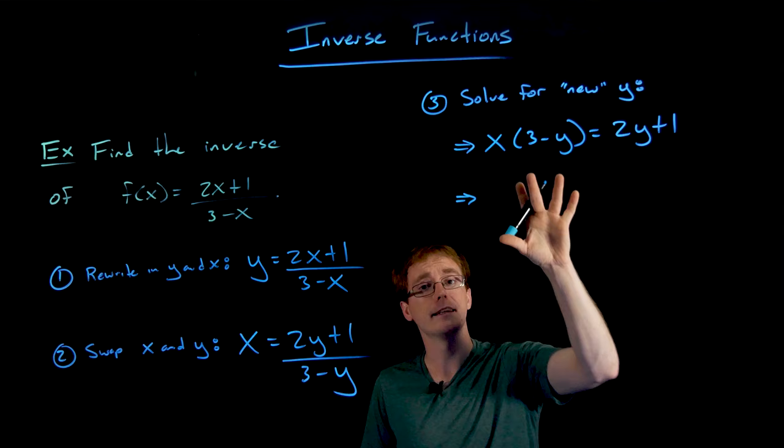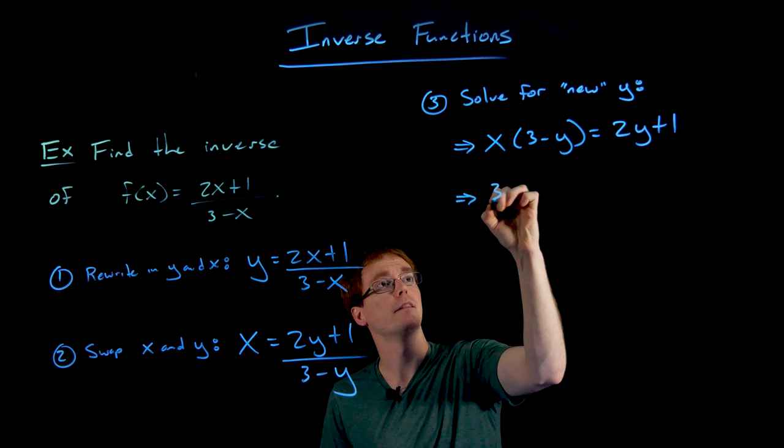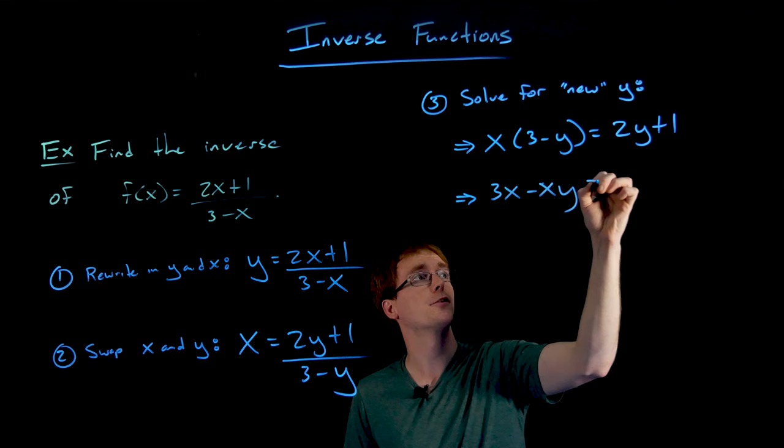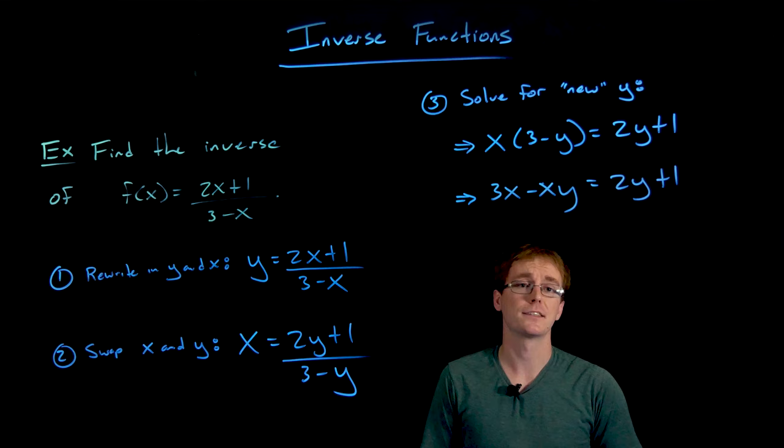So on the left-hand side, that's the only place where we can really expand anything. We just distribute that factor of x throughout our quantity in parentheses. That'll give us 3 times x minus x times y.